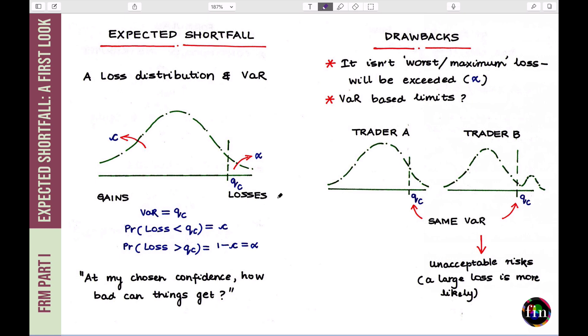So if you are given a distribution of losses, which means that the loss that you will incur on the positions that you are holding at the current moment is unknown to you. It's a random variable. And for that random variable, let's assume that there is a distribution which is given to you. From that distribution, and if you understand what value at risk is, you can mark off what we call a quantile, which is a number on the x-axis to the left of which is a predetermined area.